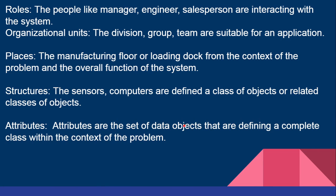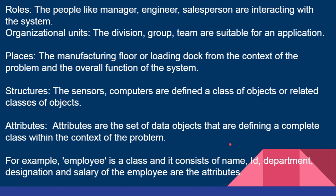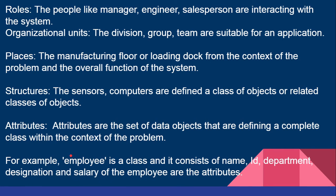Attributes are the set of data objects that define a complete class within the context of the problem. Based on the context, the attributes may vary. For example, the employee is the class and it consists of name, ID, department, designation, and salary as attributes. So the employee will have a name, an ID, belong to some department, have a designation, and have a salary range. Everything becomes an attribute of the class employee.